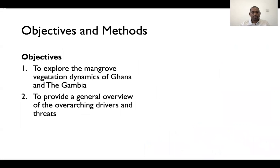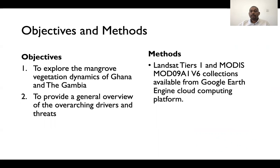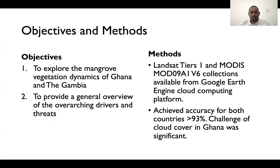The two study countries, Ghana and the Gambia, are shown here. The objective of this study was to explore mangrove vegetation dynamics in both countries and provide an overview of the overarching drivers and threats. For the methods, we applied remote sensing techniques, mainly relying on Landsat imagery and also MODIS, with most collections embedded in the Google Earth Engine cloud computing platform to produce high-resolution imagery for interpretation. We achieved an accuracy of over 93% in most of the classification processes conducted, though cloud cover in Ghana remains a noted challenge.